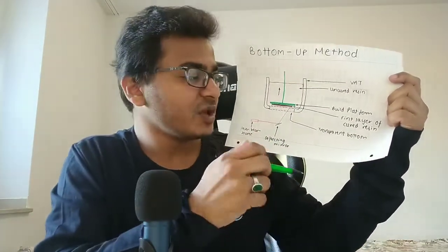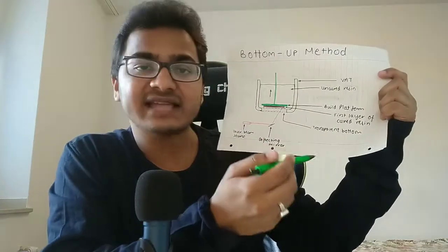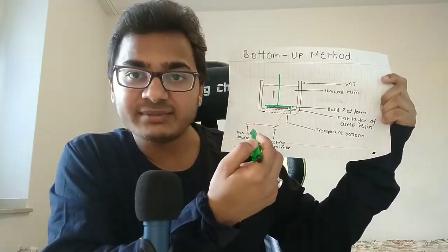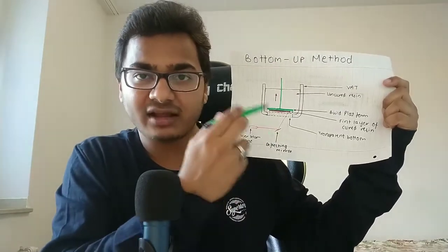One other major difference is that in the bottom-up method, the laser beam source is placed at the bottom of the tank or vat, whereas in the top-down method the laser beam source was above the tank.